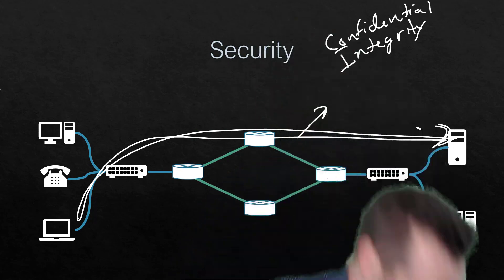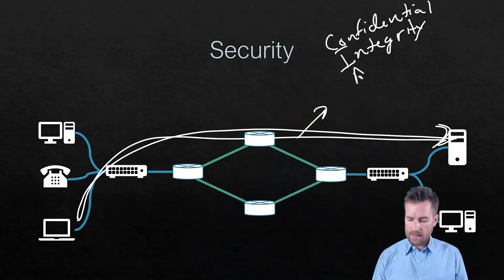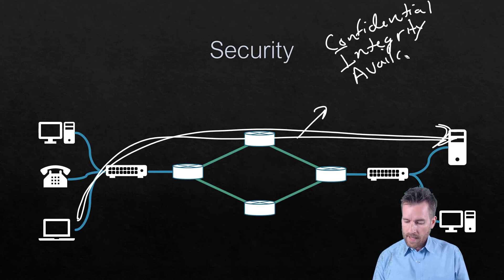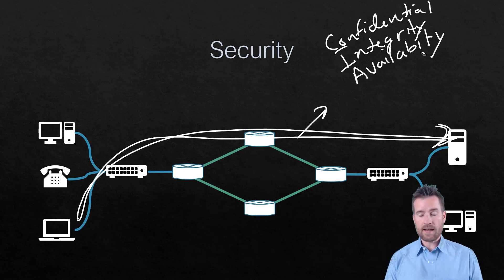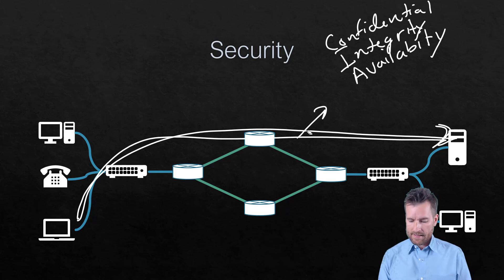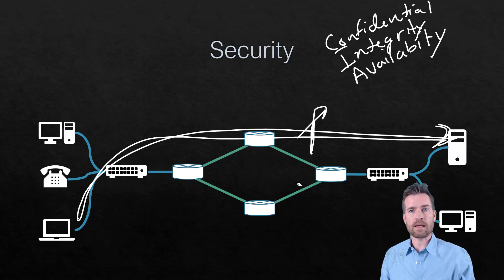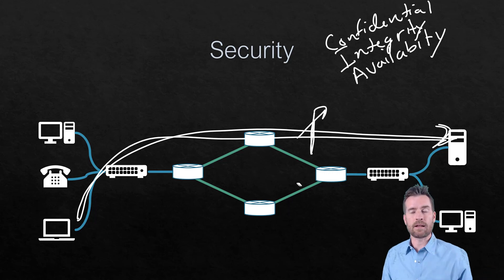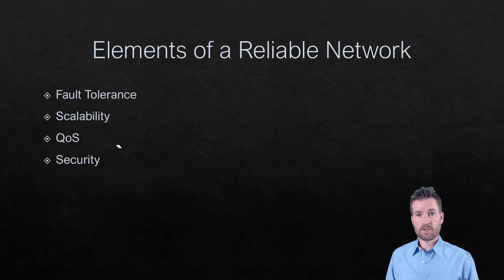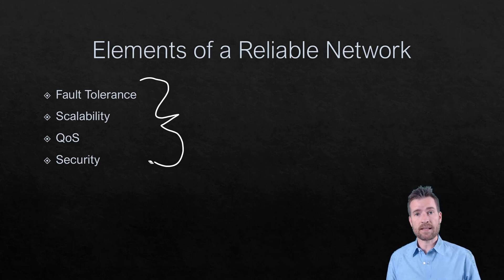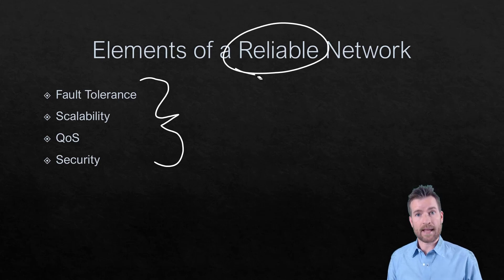And finally, there is availability — making sure that no one can go in and stop that data from being transferred, ensuring it gets from point A to point B without somebody coming in and blocking it. So there you have it: four elements — fault tolerance, scalability, quality of service, and security — are all needed to make sure that we have reliable networks.